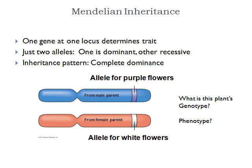This type of inheritance pattern in pea plants is called Mendelian inheritance. You have just one gene at one locus on a chromosome determining the trait, and there are just two alleles for that gene — one dominant and one recessive. This inheritance pattern is also called complete dominance because the dominant allele hides the recessive allele in heterozygous individuals.